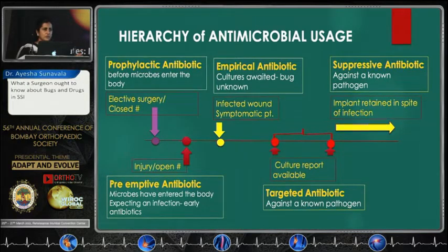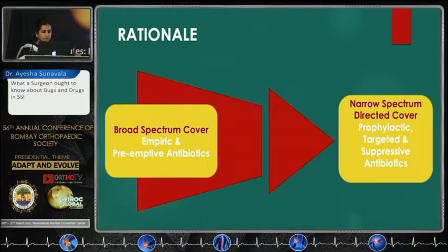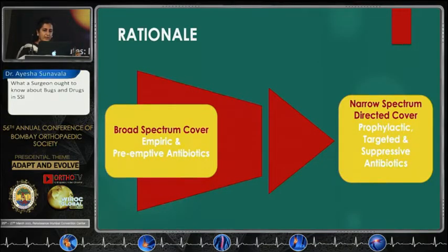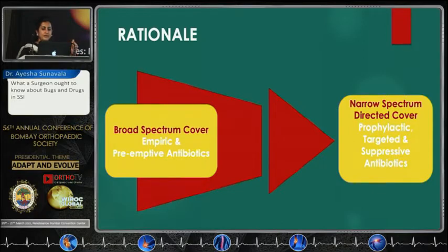What is the importance of understanding this? There is a rationale. When you are using empiric or preemptive antibiotics for unknown organisms, you will always try to give a broader cover. However, that spectrum has to narrow down when you are using antibiotics for a prophylactic, targeted, or suppressive purpose.